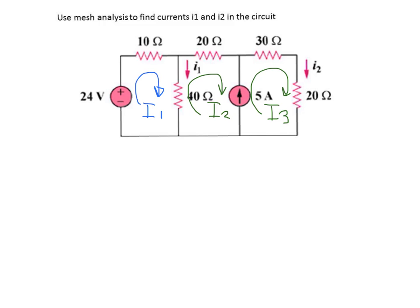Between mesh 2 and mesh 3 we have a 5A current source. Because mesh analysis is an application of Kirchhoff's voltage law, we're interested in adding up all the voltages in the loop. We don't know exactly what the voltage across the 5A current source is, so instead of using three separate meshes, mesh 2 and mesh 3 are combined and treated together as a single super mesh.